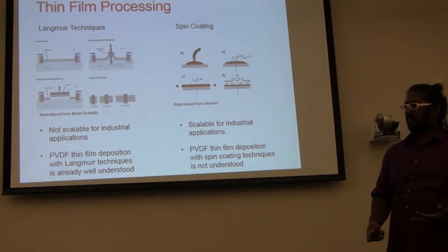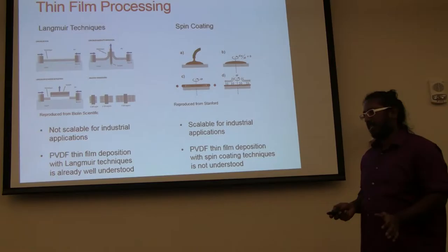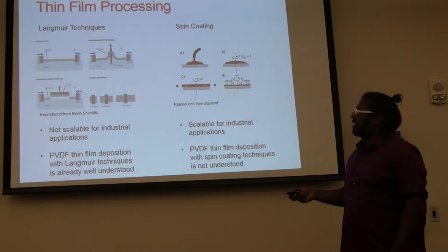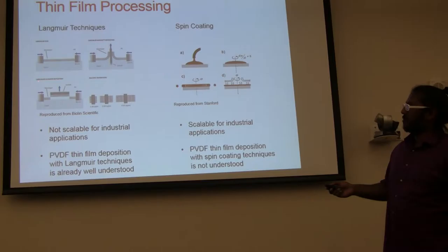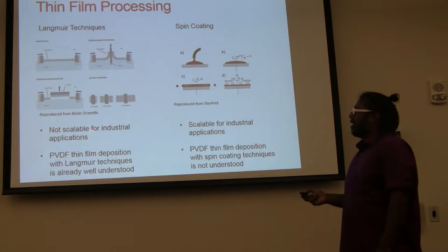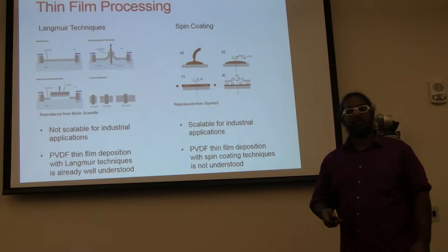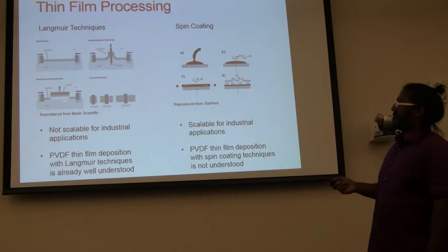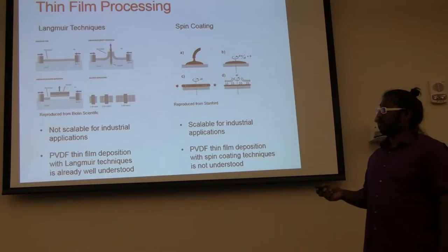So how do we produce thin films? There's two ways, industrially, that people make thin films. The first way is these Langmuir techniques, where we take the molecules and put one monolayer of a molecule on water, and then we'll lift it up onto a substrate either vertically, which is called Langmuir-Schaefer method, or horizontally, which is called the Langmuir-Blodgett method. Each one of these monolayers is about three nanometers. A nanometer is a billionth of a meter. So if you want to get to a millionth of a meter, it'll take a very long time. This is not really scalable for industrial applications because it takes too long.